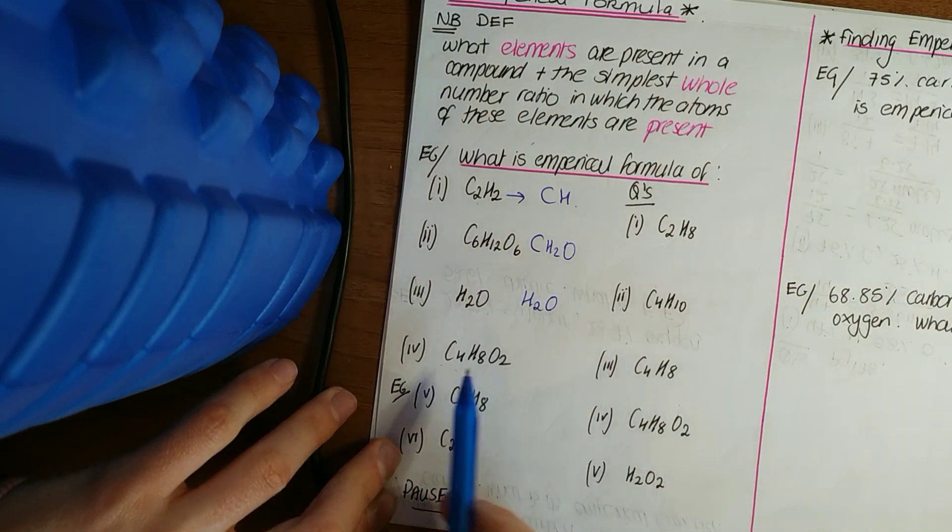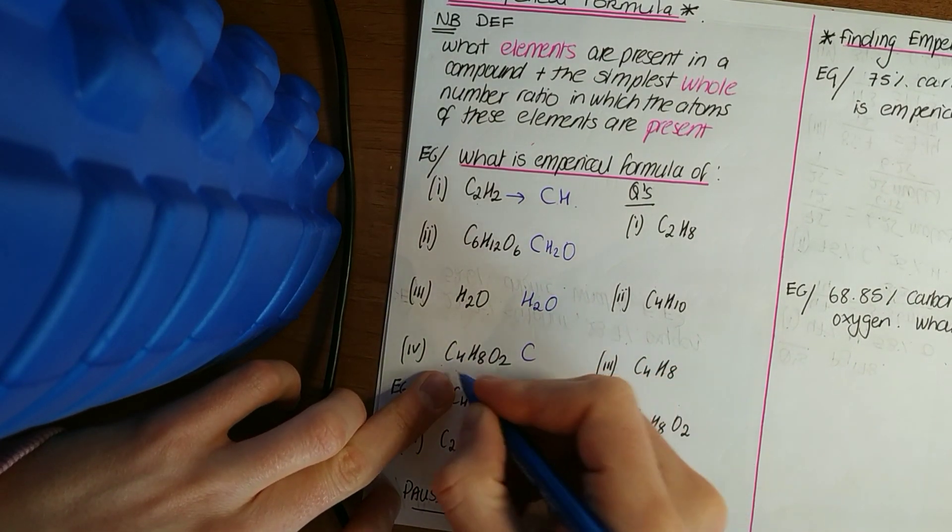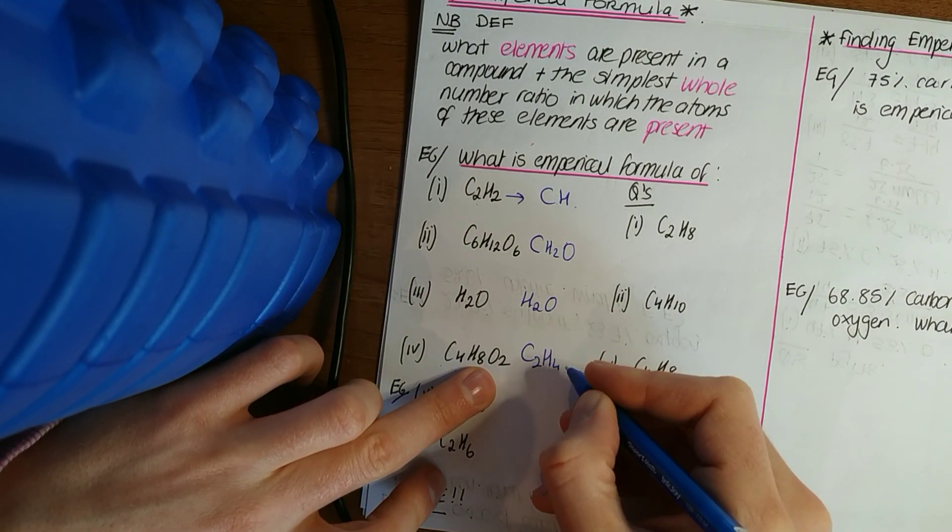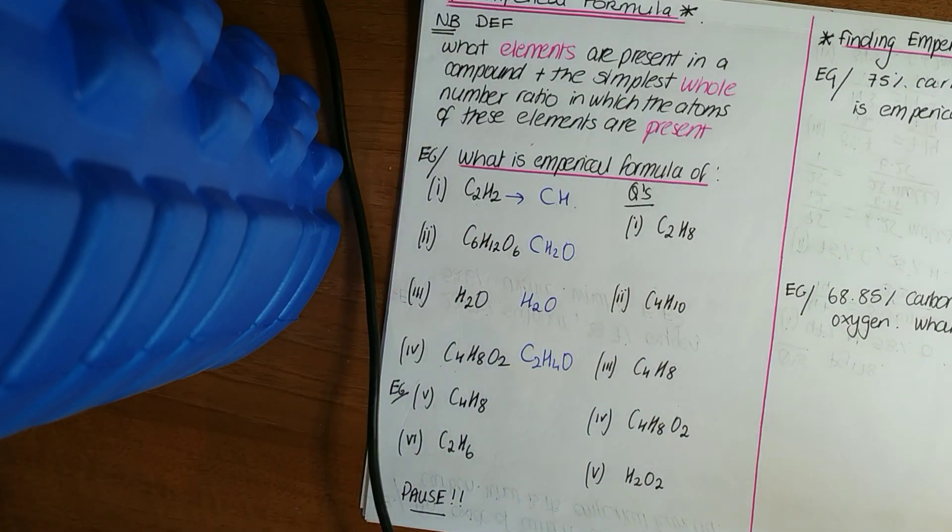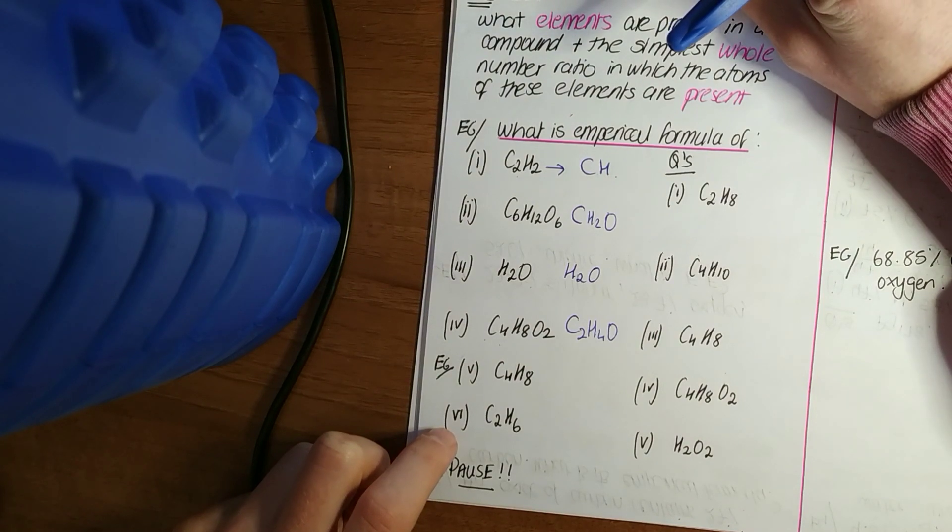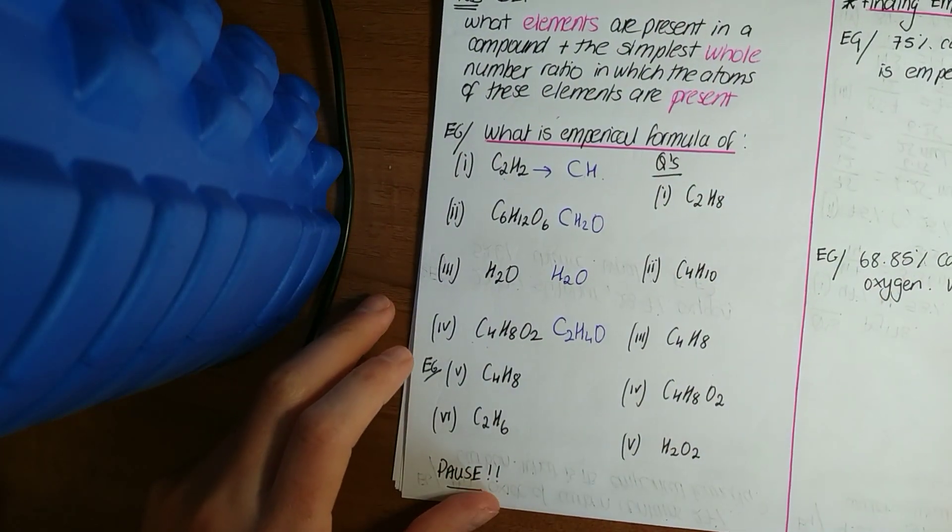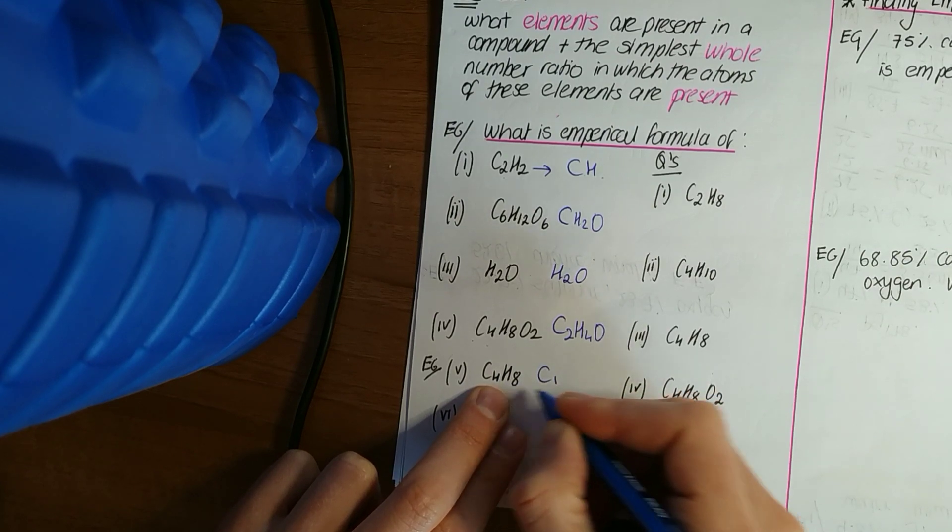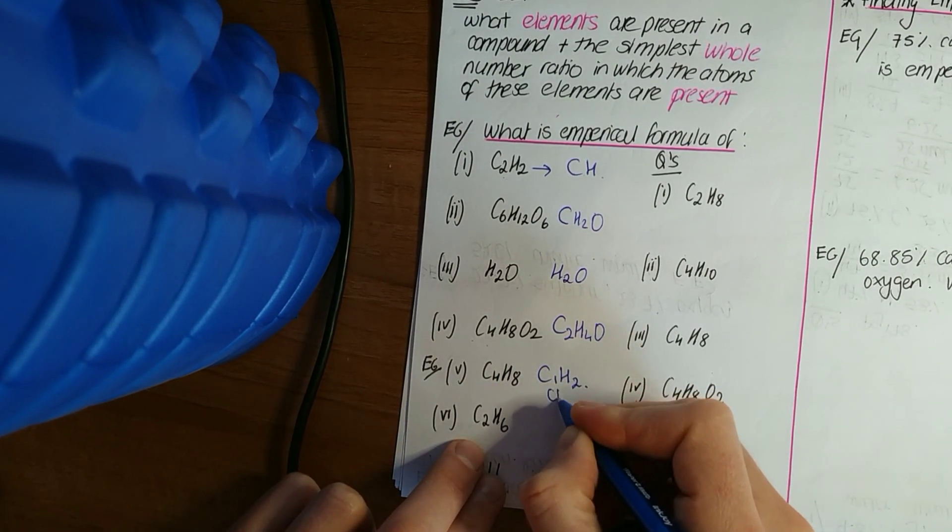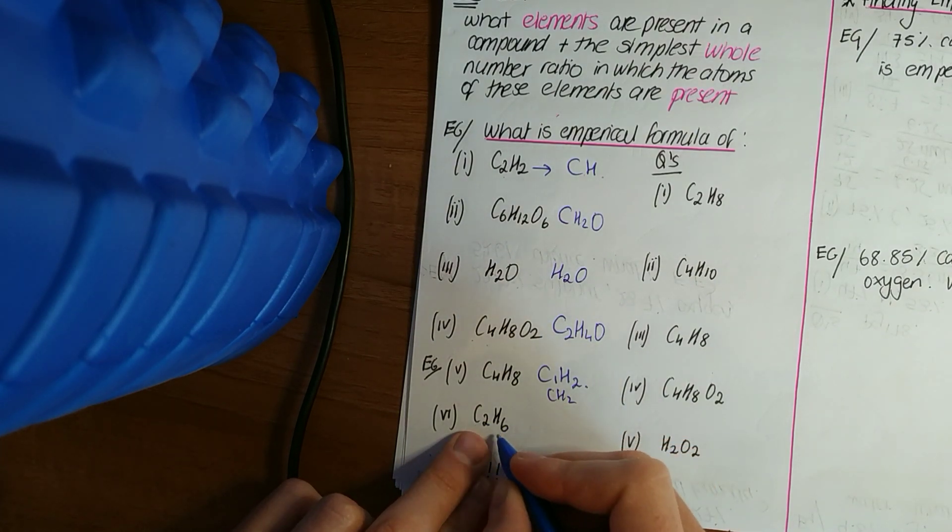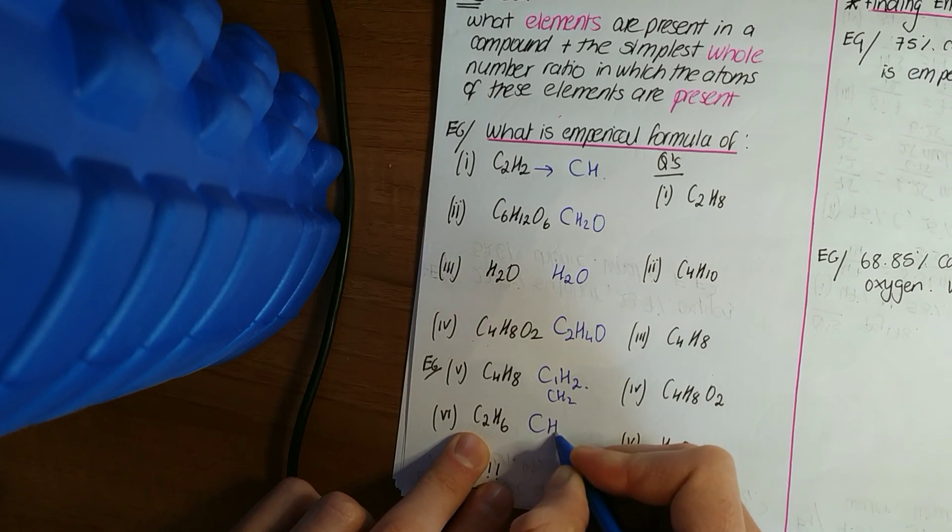C₄H₈O₂: highest common factor is 2. 2 into 4 goes 2, 2 into 8 goes 4 times, and 2 into 2 goes once. So just splitting these down. Two more examples and then you can try them, or again pause it yourself, go through them and then see where you're right, but it does get a lot more difficult than this. C₄H₈: highest common factor is 4, 4 into 4 goes once, 4 into 8 goes twice, so CH₂ - looks a bit odd, C₁H₂. And then C₂H₆: you can see 2 is the highest common factor, so that becomes CH₃.